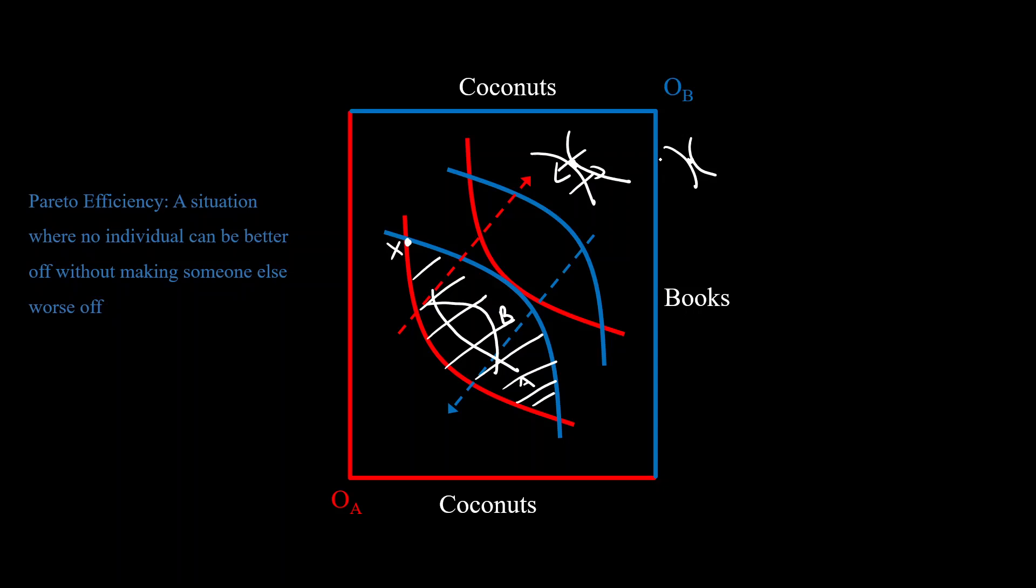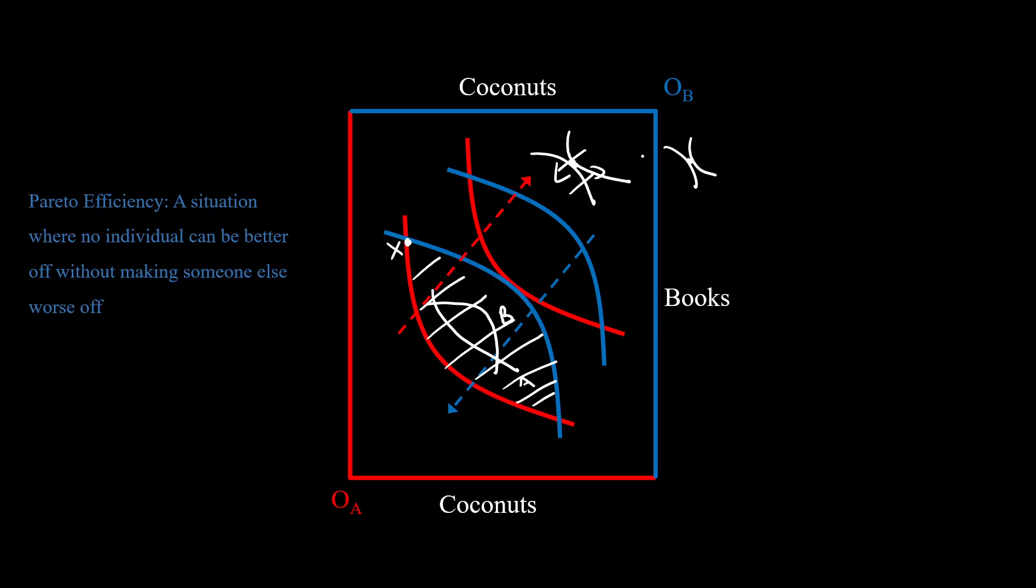The question is, will there only be one such point in the box? In fact, you can have multiple as you can see in this Edgeworth box. Let's talk about this point as well. This is the origin of A. Here A has 0, 0 for everything and B has all the coconuts and all the books in the world, right? So what if you try to take some stuff from B and try to make A better off?